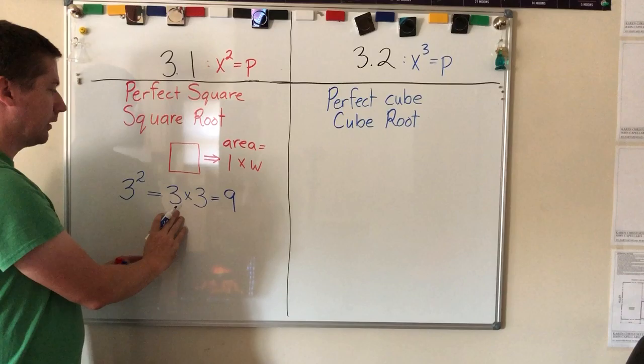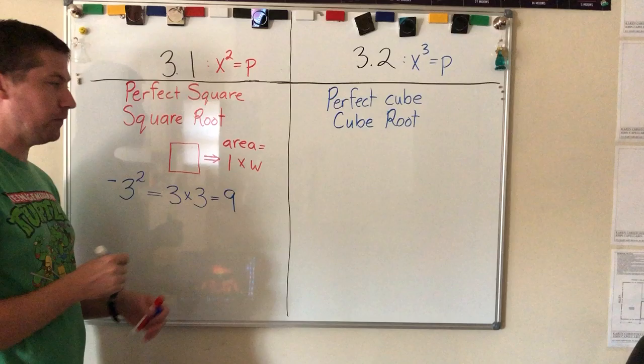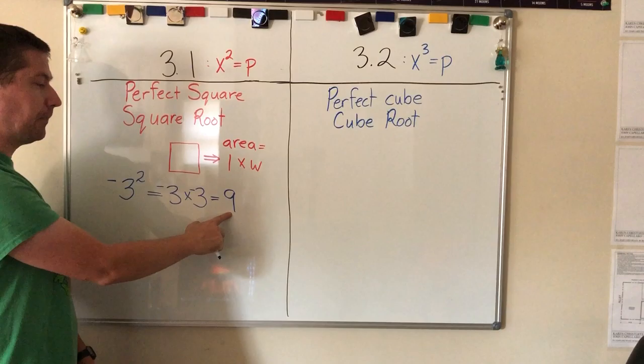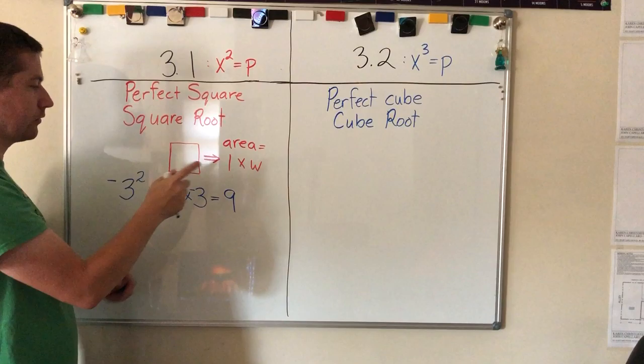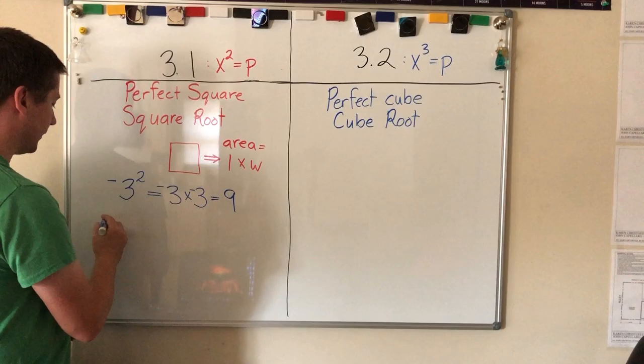Even though we're using positive numbers, our answer is going to be positive in this case. But what happens when we have a negative number? Let's say our dimensions are negative three and negative three. Well, we know from prior knowledge that a negative times a negative equals a positive number. So that's another clue that when we're working with perfect squares and square roots, our answer is always going to be a positive number.